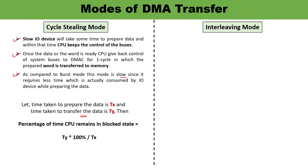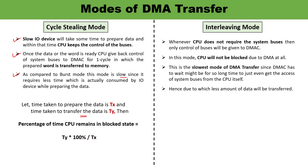Interleaving mode: control is given to the DMA controller only when the CPU is not performing any operation — when the CPU's system buses are free. This means the CPU will not be blocked at all, and it is completely free to perform its dedicated tasks. The free time of the system buses is utilized for data transfer. Because transfers depend only on bus availability, this is the slowest mode, and less data gets transferred overall.